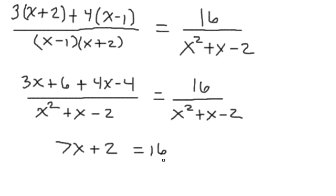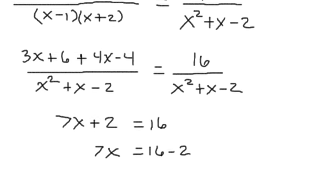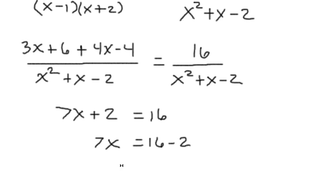So now we have this linear equation and we want to solve for x. So we have 16 minus 2. And we are going to be left with 14. So then we multiply both sides by 1/7th. So x is equal to 2.